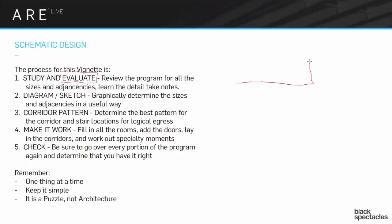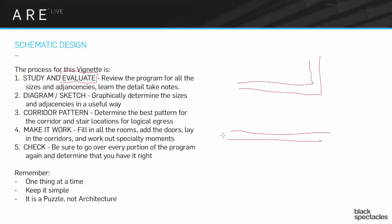Do you have a corridor pattern that's an L? Do you have one that's a straight line? If you make sure that whatever concept you choose makes sense, then it's easy to start plugging in rooms that fit to that. That's step four: put the rooms in, make it work, put the doors in, and do all of that where you're really drawing it all out.